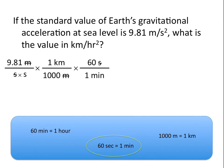Remember that seconds squared is just equal to seconds times seconds. So after we cancel out one unit of seconds, we're still left with units of seconds on the bottom. To convert from seconds squared to minutes squared, we'll need to apply this conversion factor again. Having 60 seconds on the top again allows us to cancel out the other unit of seconds on the bottom. Now we're left with kilometers per minute times minute, or kilometers per minute squared.